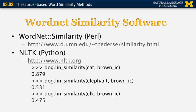Many of these algorithms are implemented in software for pretty much any major programming language, including Java and C++. Specifically, there is a Perl implementation called WordNet Similarity by Ted Pedersen at the University of Minnesota Duluth, and a Python version that is part of the NLTK software. Running NLTK's LIN similarity function using the Brown corpus as the knowledge base: the similarity between dog and cat is 0.879; between dog and elephant it is 0.531; and between dog and elk it is 0.475.